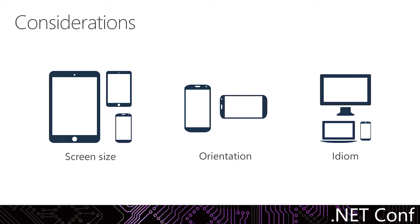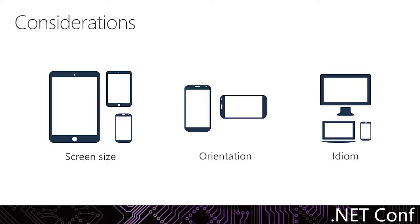Some devices — the screen real estate changes at runtime. The obvious example is taking a phone and changing it to landscape. That helps us realize screen size and orientation are different problems. When we talk about screen size, usually we're detecting it one time on load. But we also need to handle runtime changes. And then there's idiom — which goes beyond just how it looks, because we need to think about whether a finger can click it, or whether it's too small because it was made for a mouse.